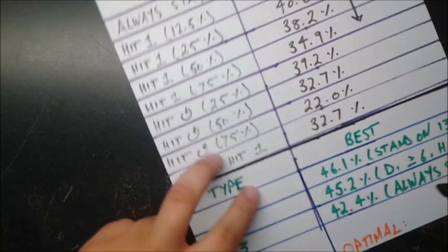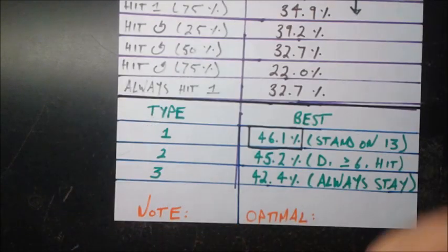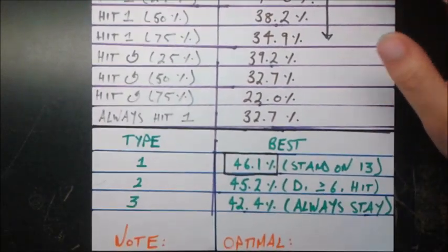And in fact, the best one out of these three is actually 46.1%, which is stand on 13. So this gives evidence that if you're just playing with your friends, you know, just playing commonly, you might want to just stand on 13s.